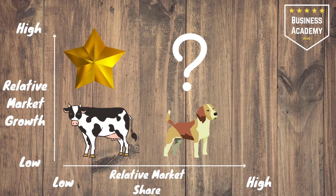Here you see the actual model. We have on the axes relative market growth and relative market share. And we have stars, question marks, cash cows and dogs.